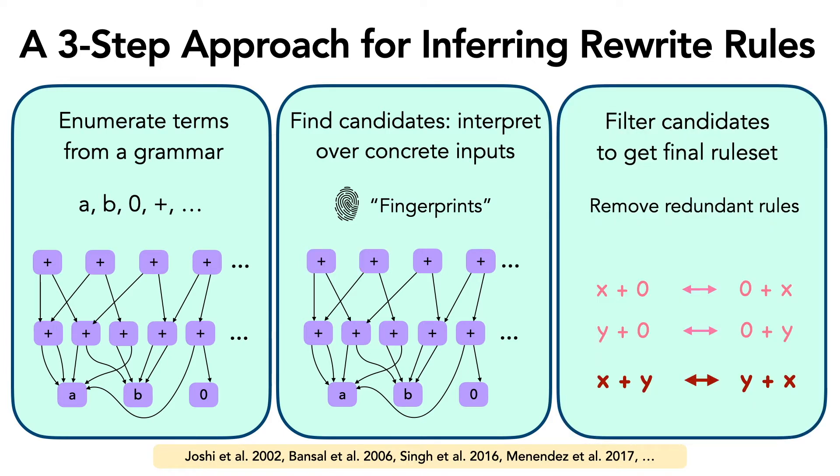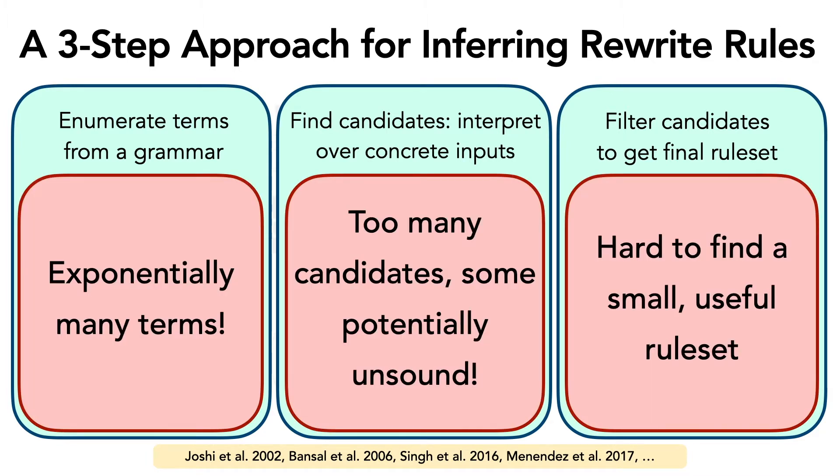So after the candidates are generated, the next step is to filter out redundant ones to keep a small set of useful rules. Now each of these steps come with their own challenges. For example, term enumeration can be tricky due to there being exponentially many of them. Candidate generation is hard because there may be unsound candidates that need to be filtered out. And finding a small set of rules can be hard because redundant rules can make the rewriting engine slow.